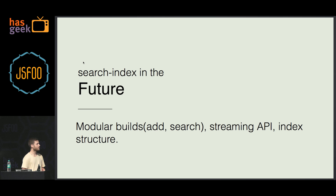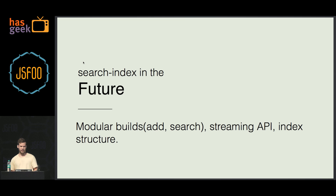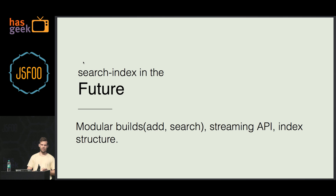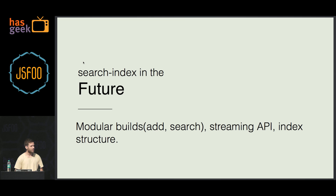In the future, there are some things we'd like to do. We realized we probably don't need the indexing functionality in the browser if you're going to replicate anyway — you don't need the extra code for adding documents on the fly. We plan to make modular builds: the core of search index would only let you search in your data, and you'd specify if you'd like to add documents. Since search index is based on LevelDB with its nice streaming API, we're thinking of rebuilding our API on top of that. There's also quite a lot of work on the index structure to get the keys and values smaller.